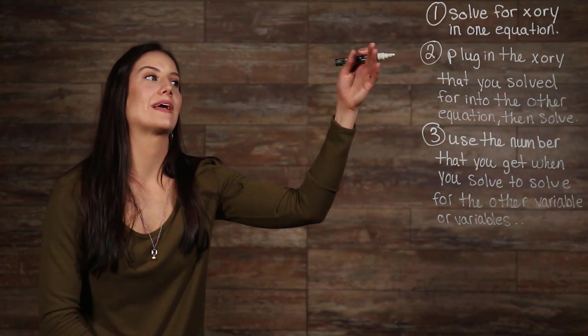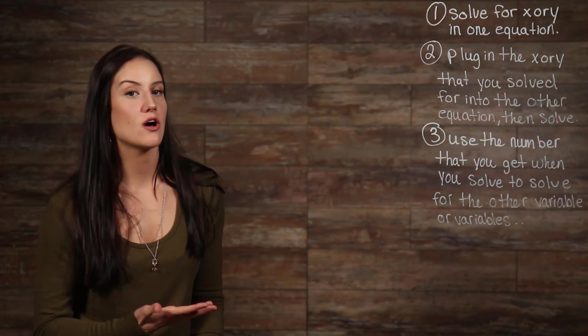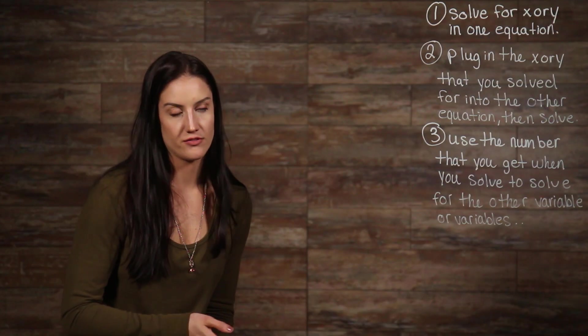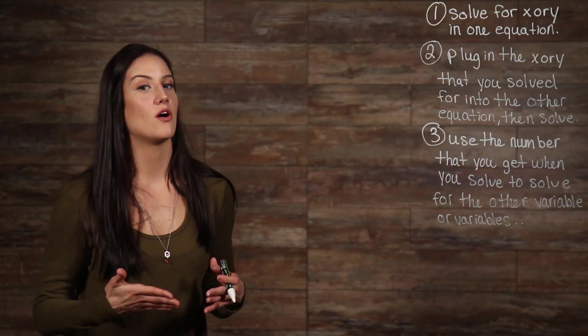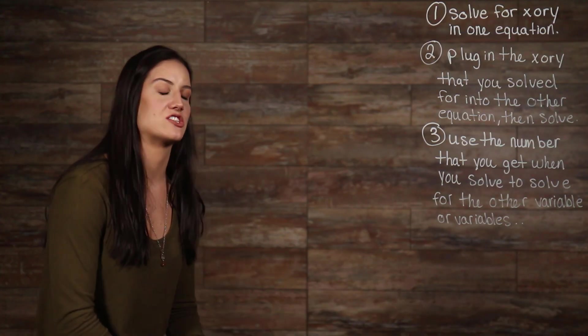There are three steps that you need to follow in order to be able to solve the system using substitution. First, you need to solve for your x or y in one equation. Then, you need to plug your x or y that you solved for into the other equation, then solve. Then, lastly, use the number that you get when you solve to solve for the other variable or variables, depending on how many equations that you have.